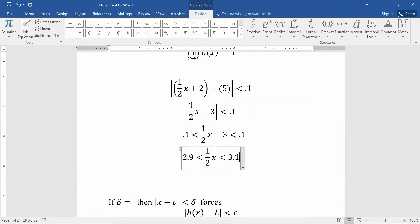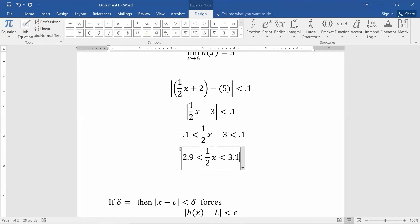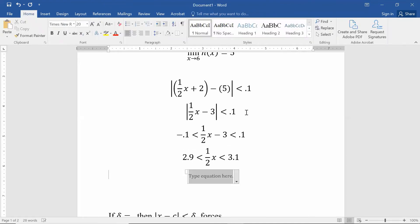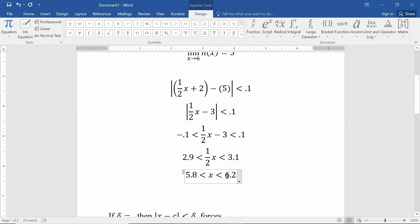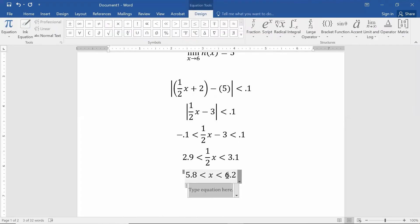1/2x in the middle, and then 3.1 on the right. In order to get x by itself, I need to multiply everything by 2. So if you take 2.9 times 2, you get 5.8. 1/2x times 2 is just x, and then on the right hand side, 3.1 times 2 is 6.2. So in order for the output to be really close to 5, the input has to be really close to 6.